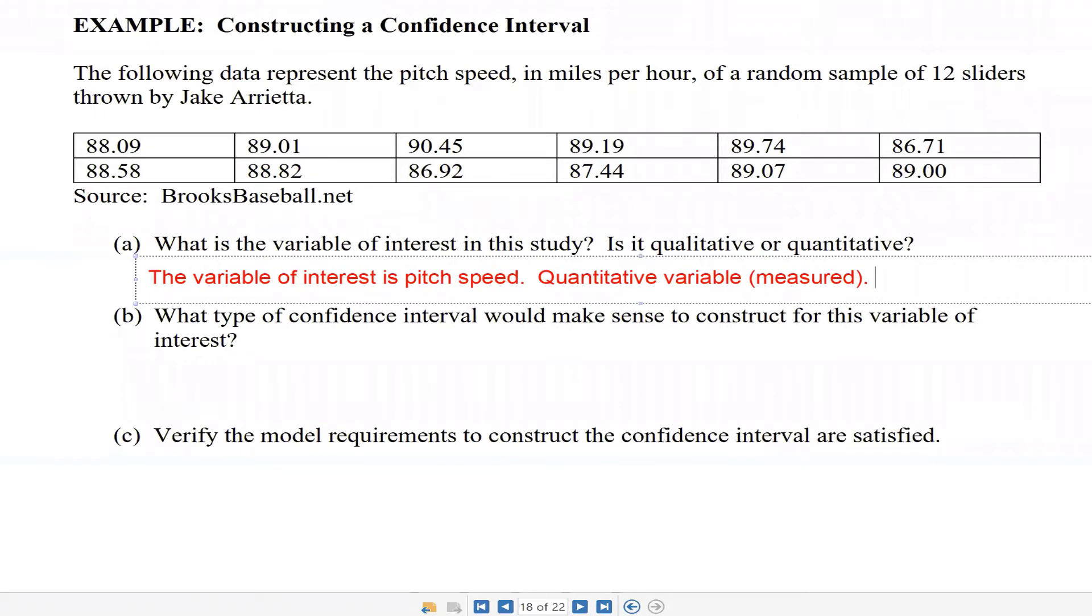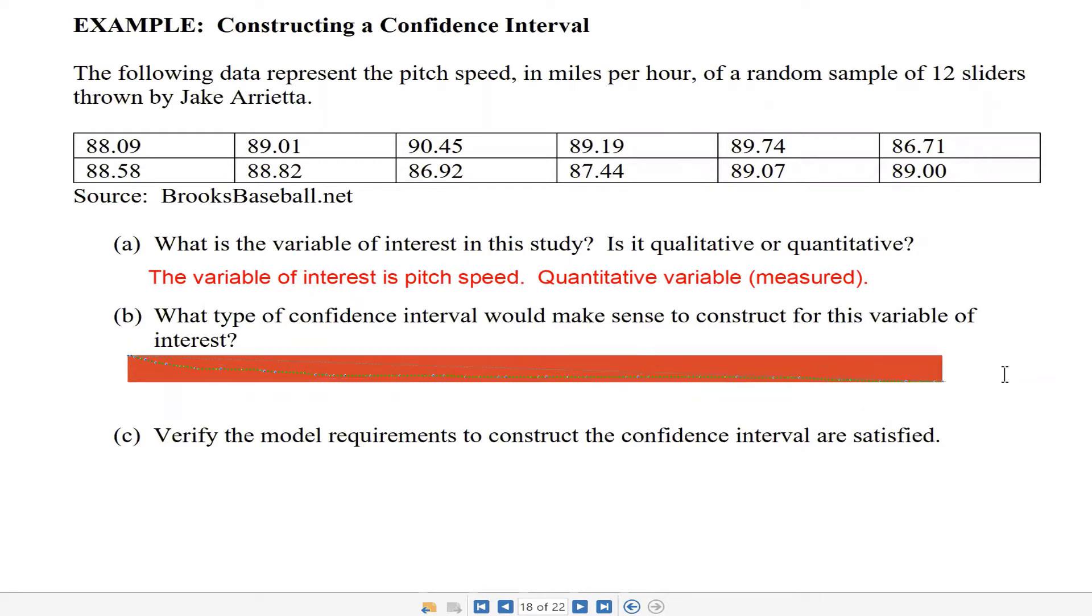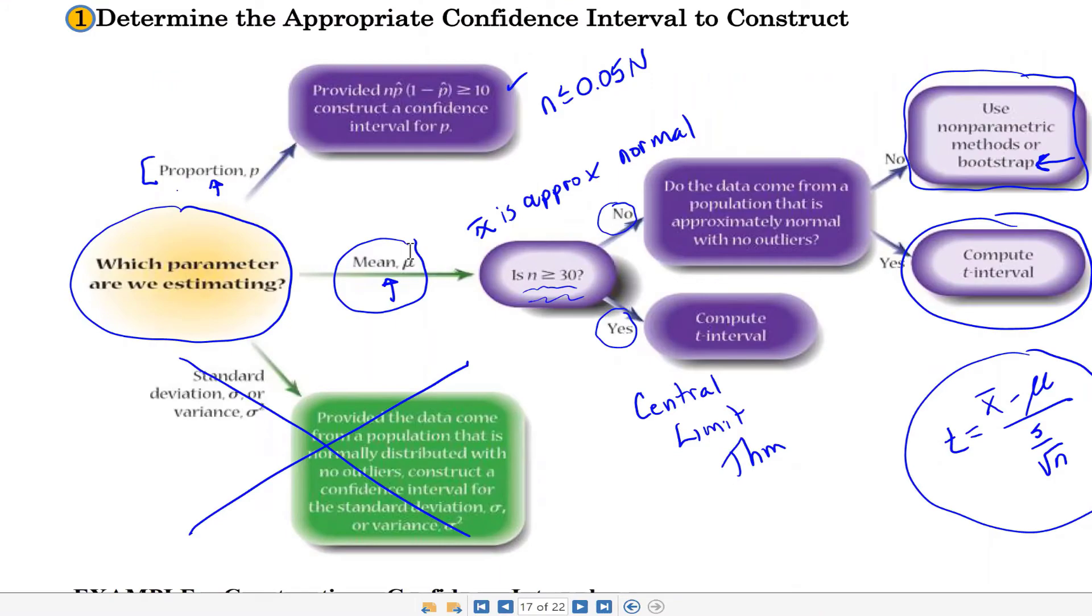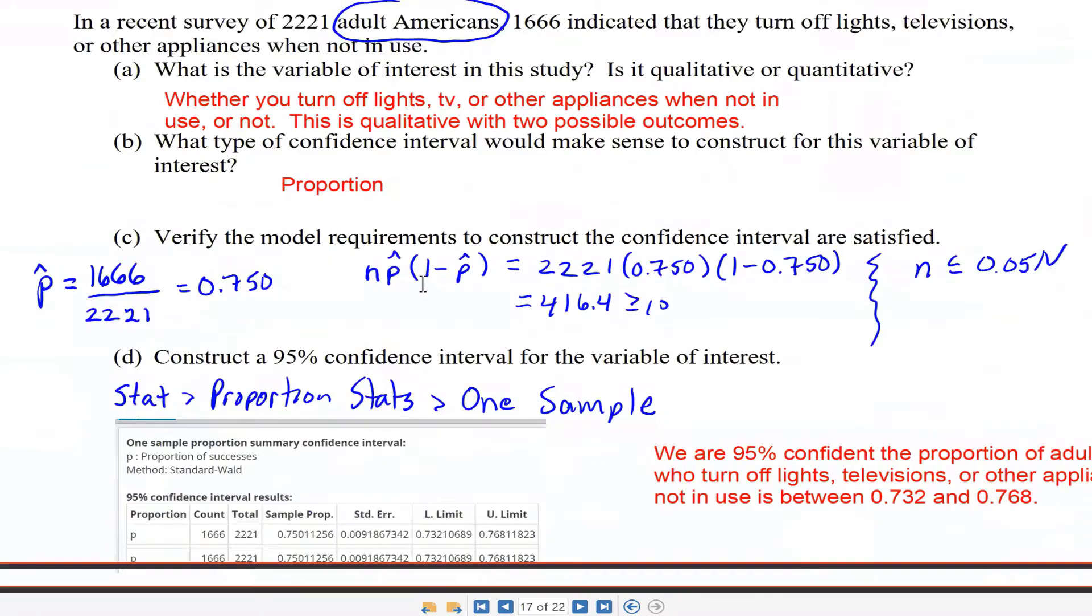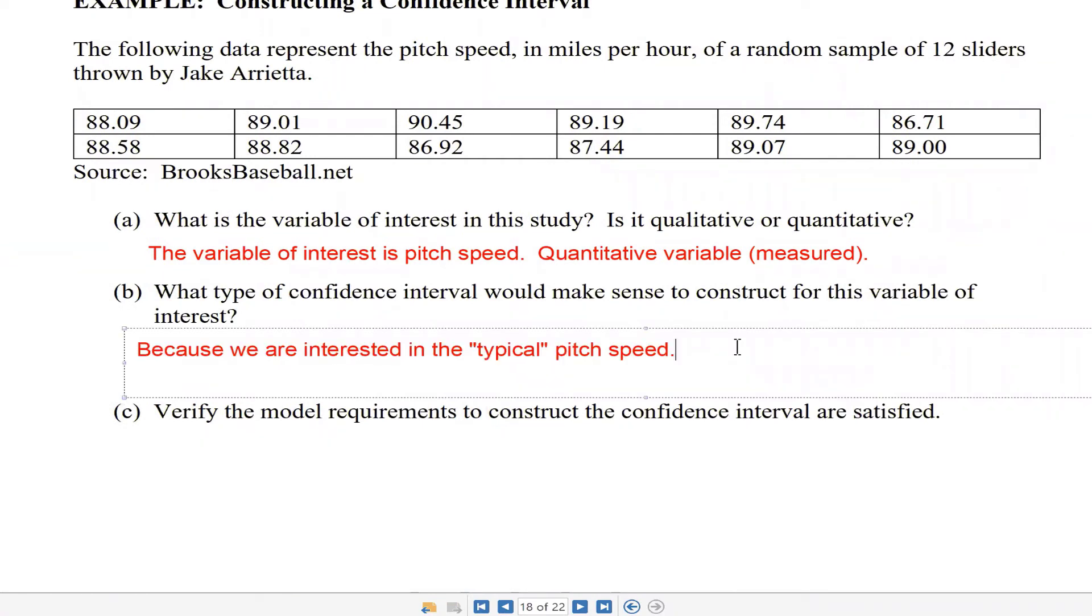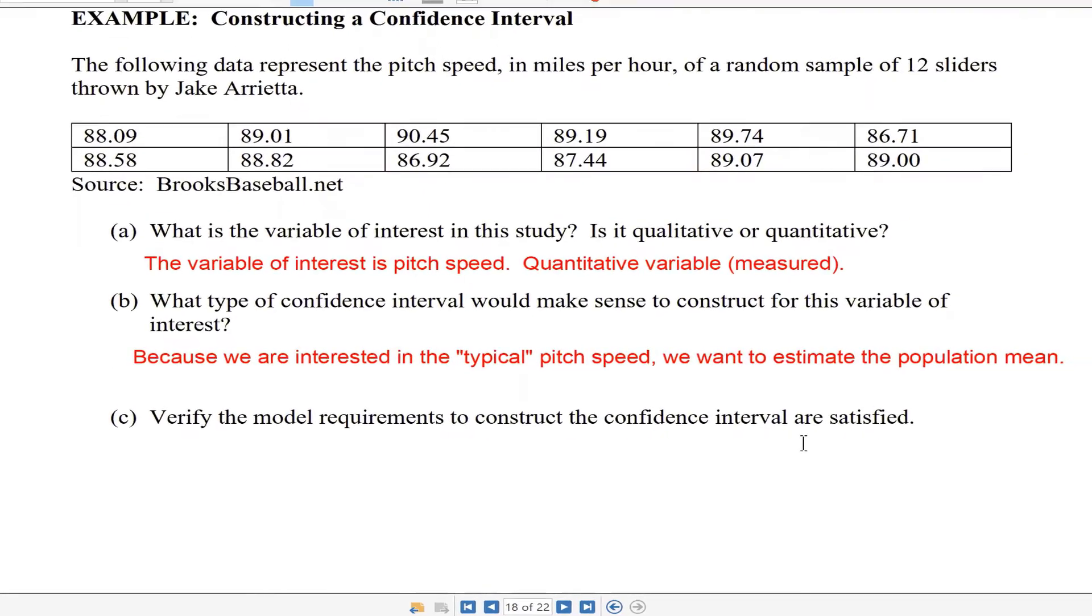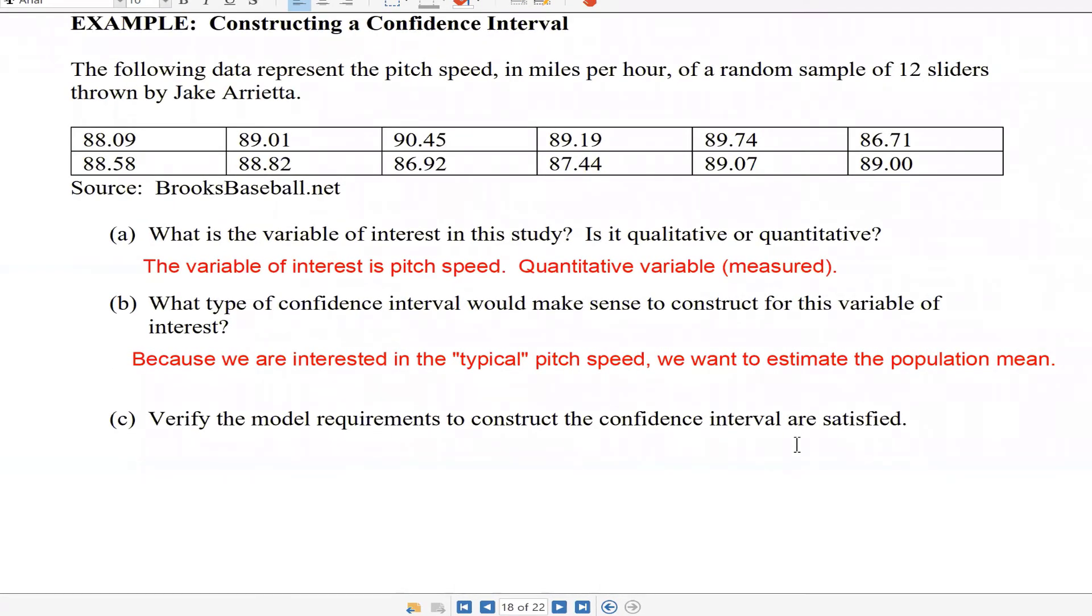We could go further and say it's a continuous random variable if we wanted to. We're interested in the typical pitch speed of an Arrieta slider, so what type of confidence interval would make sense? What parameter are we trying to estimate? This one's going to be the mean. Because we're interested in typical pitch speed, we want to estimate the population mean.